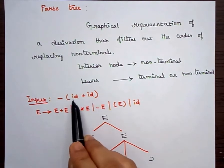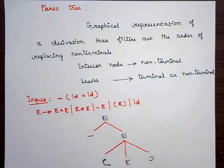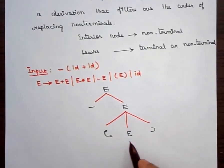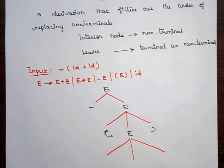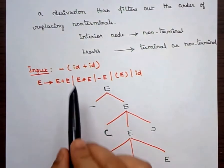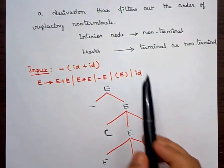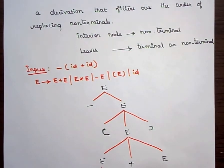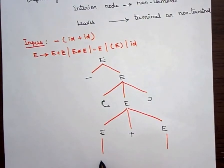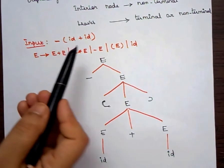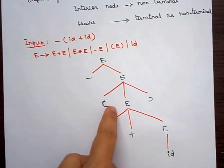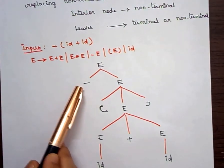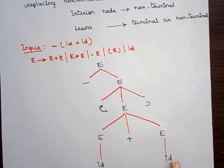Inside the parenthesis we have id plus id, which is of the form E plus E. So we derive E plus E from this E. After that we have id, so we replace the non-terminal symbol E with the terminal symbol id, which is present in the production E implies id. Both E's are replaced with the terminal symbol id. This is the parse tree for the given input minus open-parenthesis id plus id close-parenthesis. Looking at the leaves of the tree, we can read off the input: minus, open parenthesis, id, plus, id, close parenthesis.